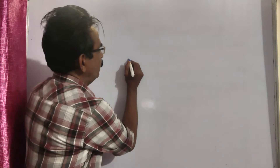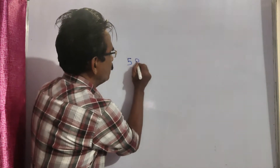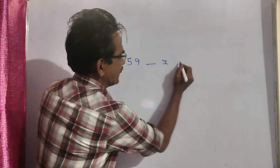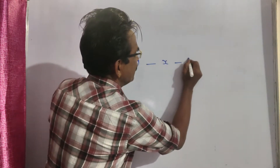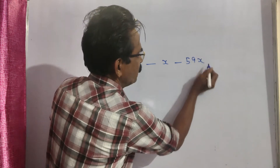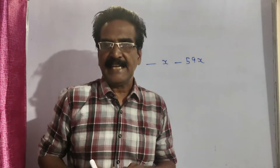That is the question. Friends, let the average weight of the 59 students be x. Then the sum of weights of the 59 students is 59x.